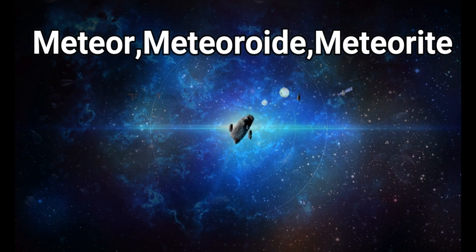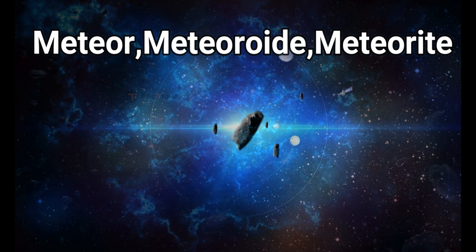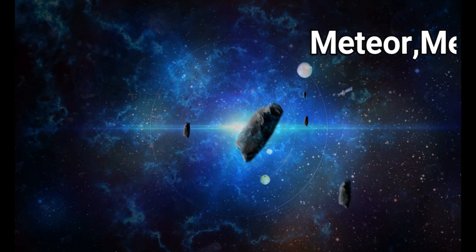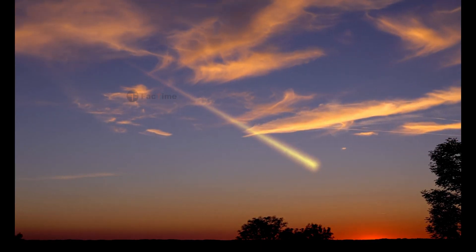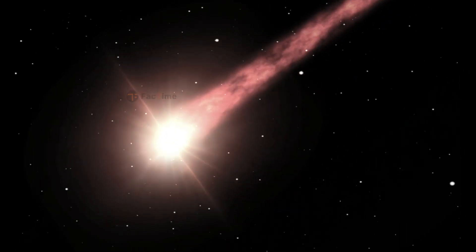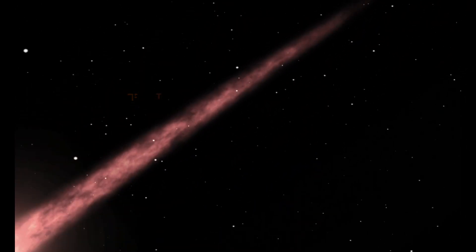A meteor, meteoroid, and a meteorite are all related to the flashes of light called shooting stars, sometimes seen streaking across the sky, but we call the same object by different names depending on where it is.